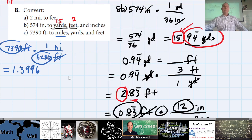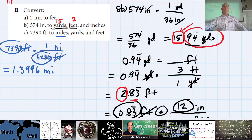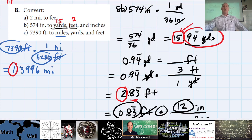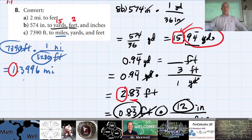So that's 1.3996 miles. How many whole miles do we have? One whole mile. Now I'm going to work on the decimal portion to get yards.